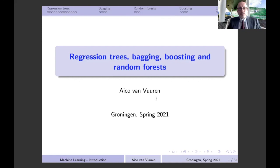Welcome to this last video in machine learning. Today we are going to look at our final topic: regression trees, bagging, boosting, and random forests. These are very fancy names describing what we could say are the best or most powerful tools in machine learning today. Officially, the only method we're going to look at today which is really a prediction algorithm is regression trees.